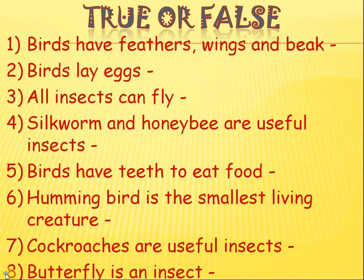Let us go to the next screen. The next variety of question is true or false. A small feature or characteristic of a bird or an insect is given here. After reading the question, the kid has to judge whether the information is correct or not, and accordingly writes whether it is true or false. For example, 'all insects can fly' — that statement is false, so the kid has to write false. For question number 8, 'butterfly is an insect' — that is a true statement, so the kid has to write true.